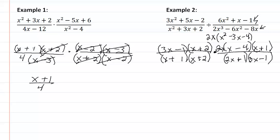So now we're looking for common factors between the top and bottom. I see that the 3x minus 1 is a common factor, x plus 2 is a common factor, x plus 1 is a common factor, and it doesn't look like I'm seeing anything else.